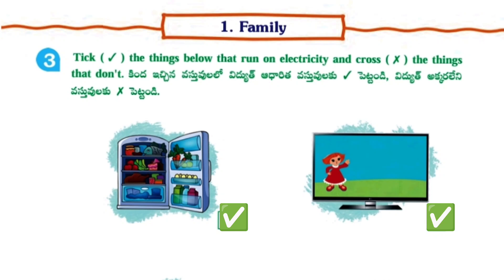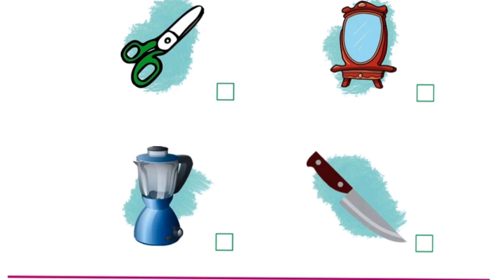Television — it works on electricity, so you have to tick right. Scissors — it doesn't work on electricity, so wrong mark. Mirror — it doesn't work on electricity, so wrong mark.